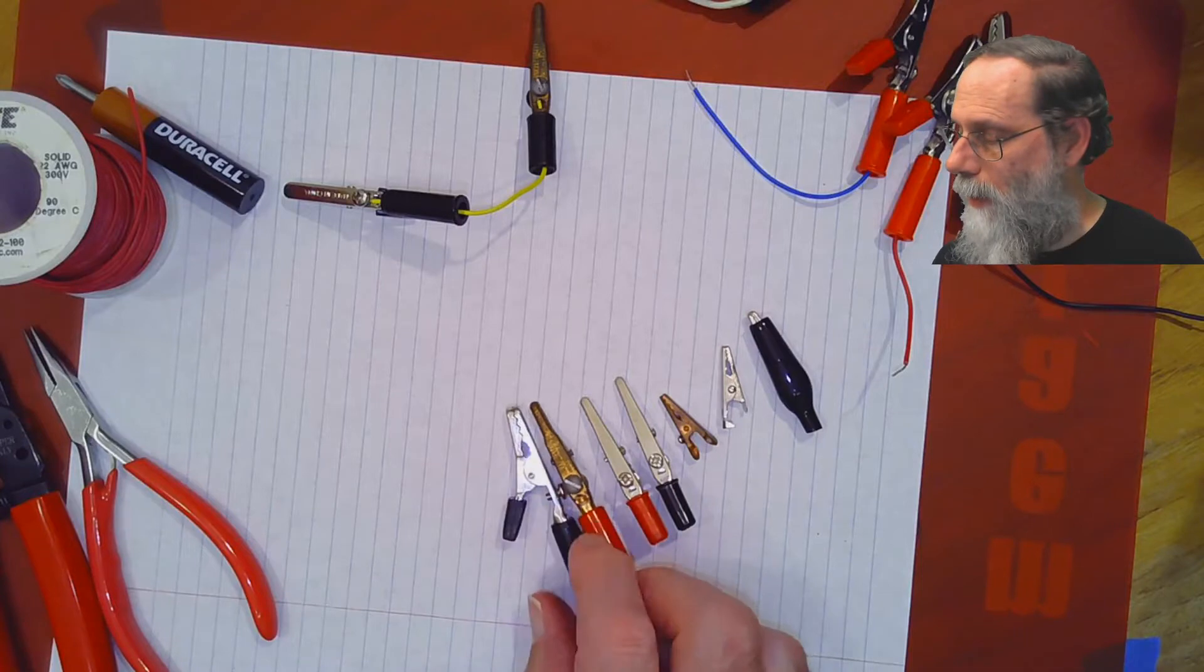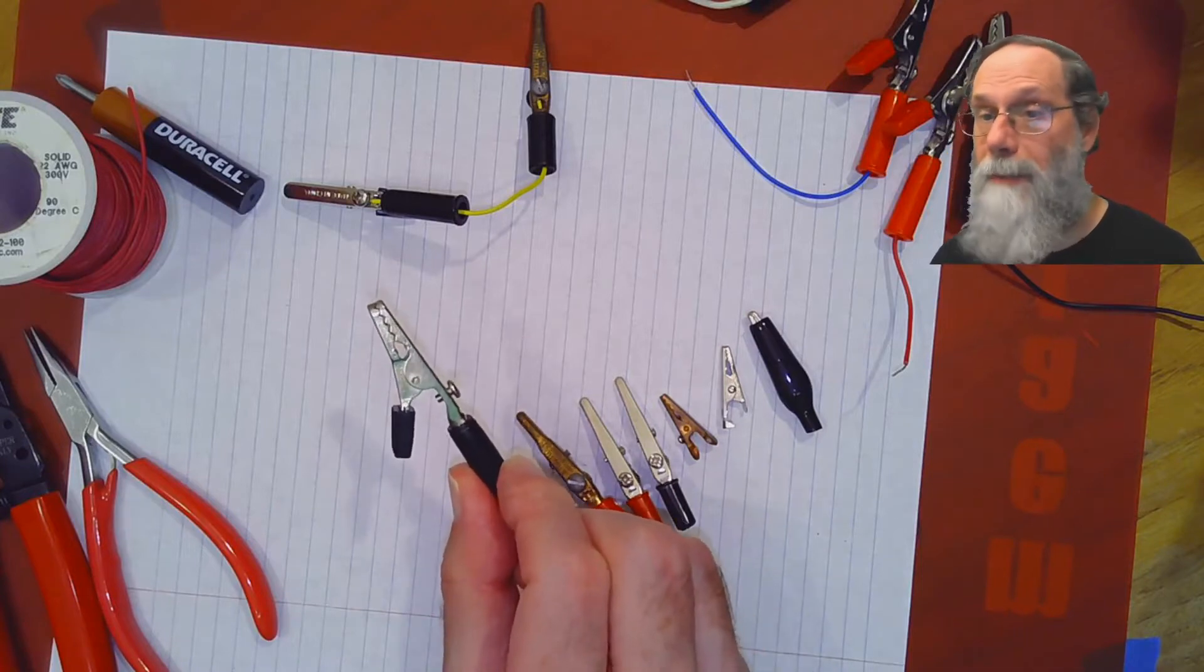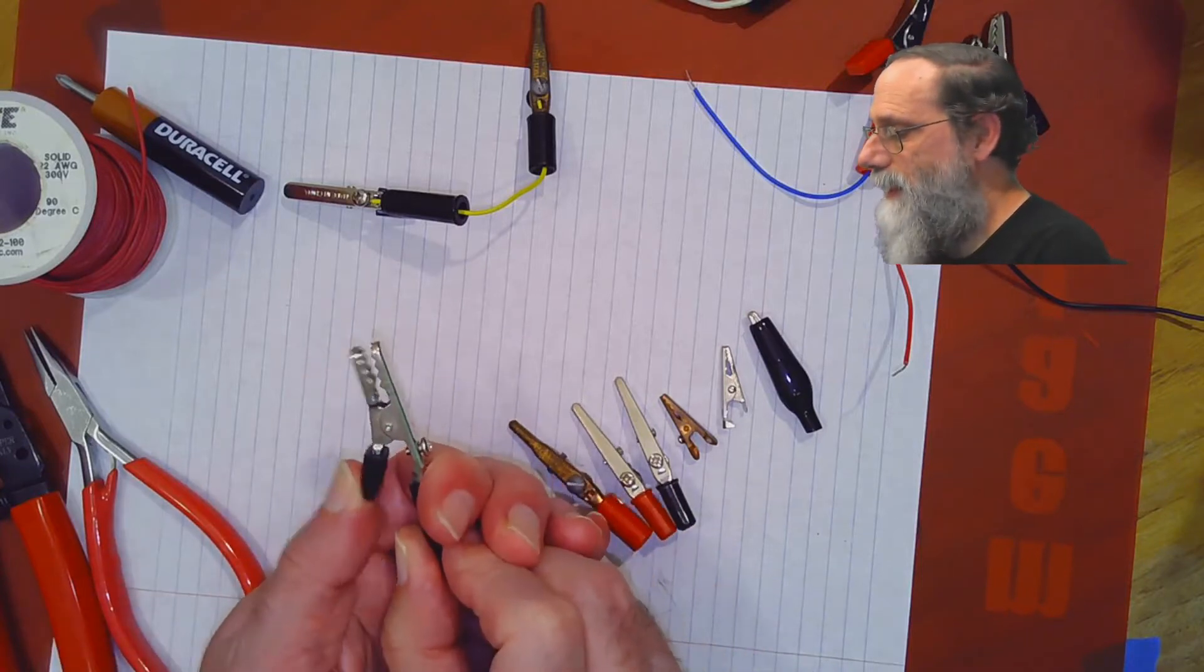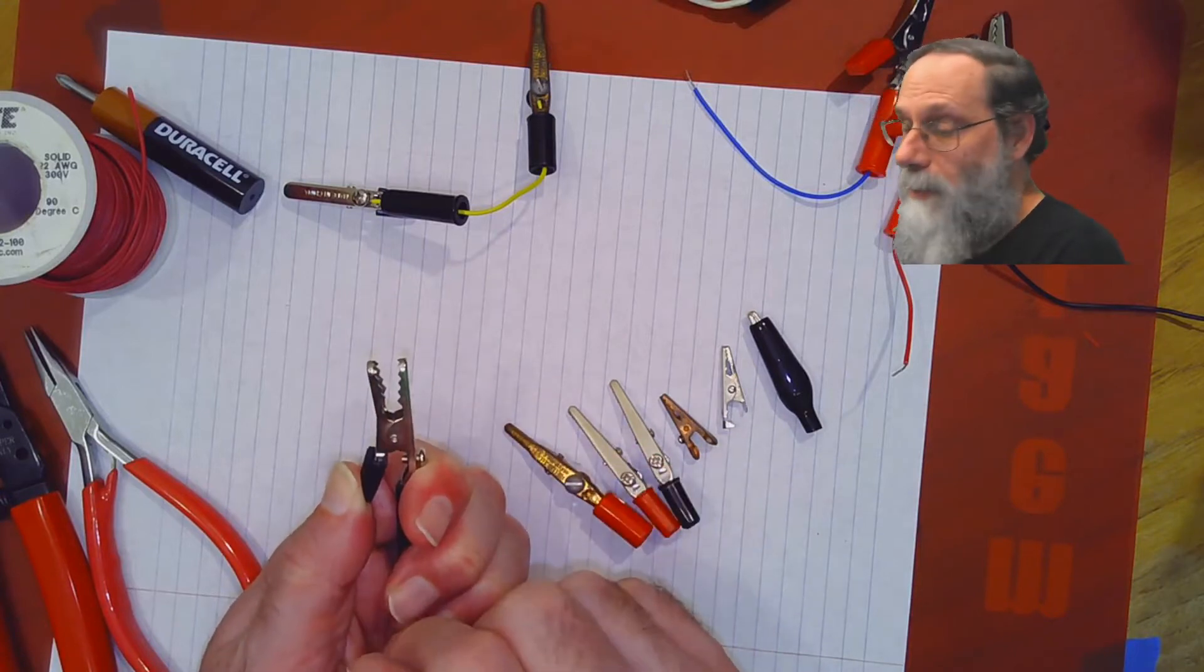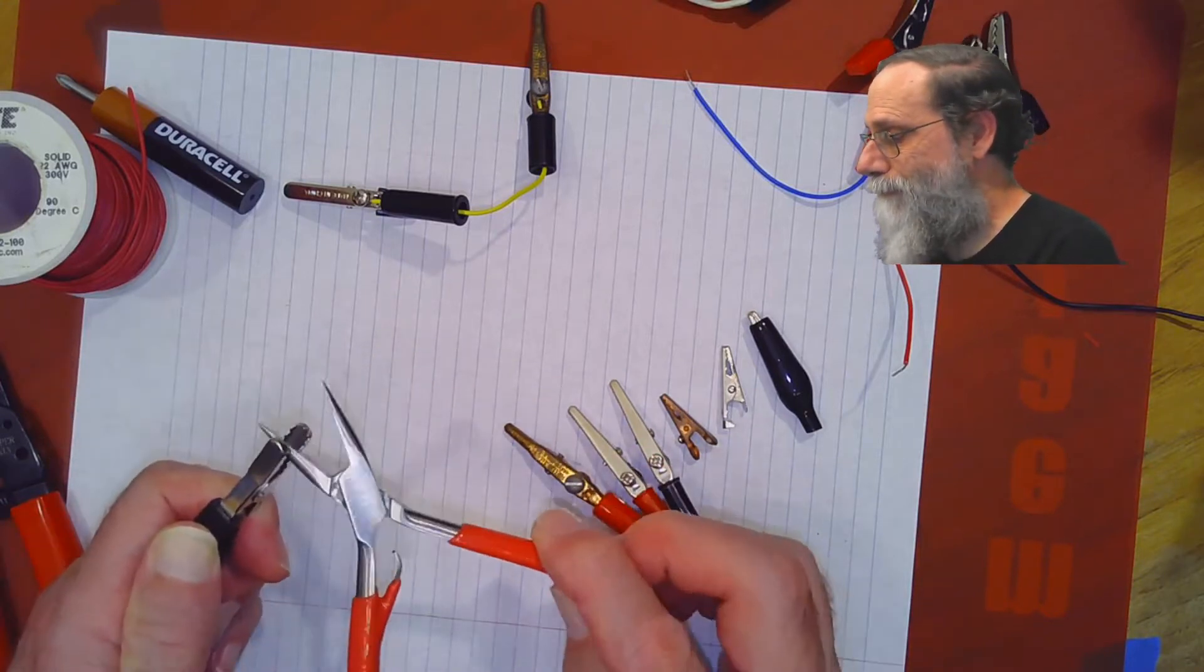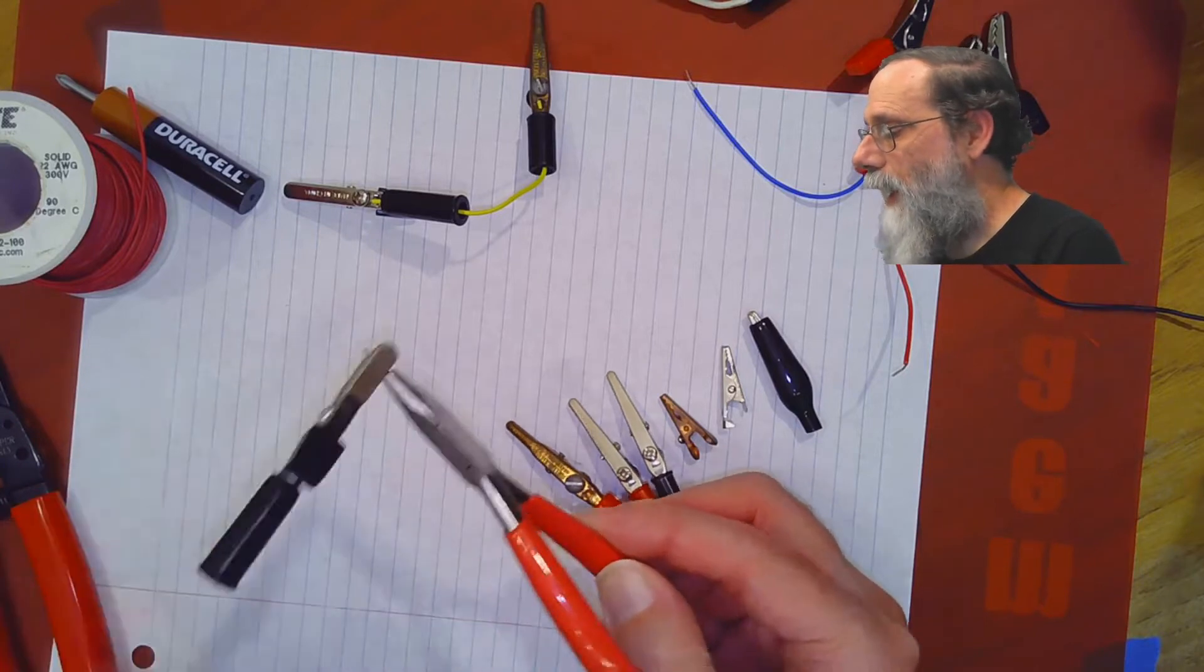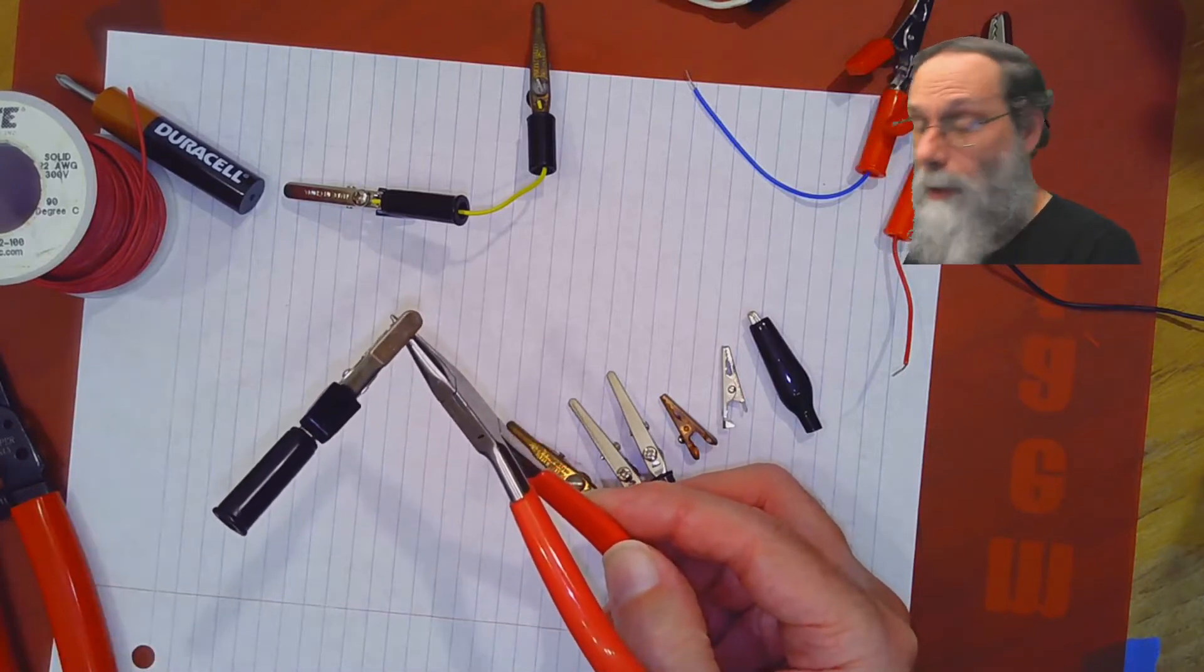Alligator clips are these little metal objects with teeth in the jaws. They're designed for grabbing onto pieces of metal and making a good electrical connection to them.